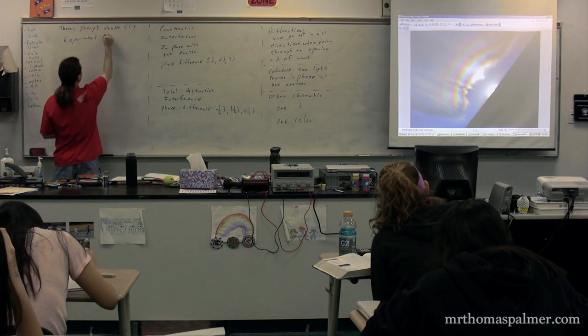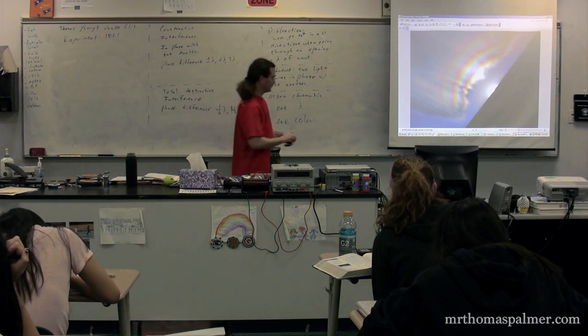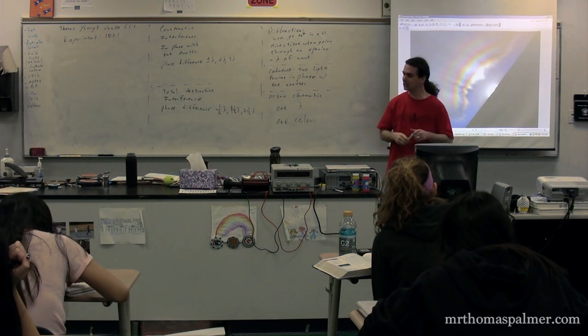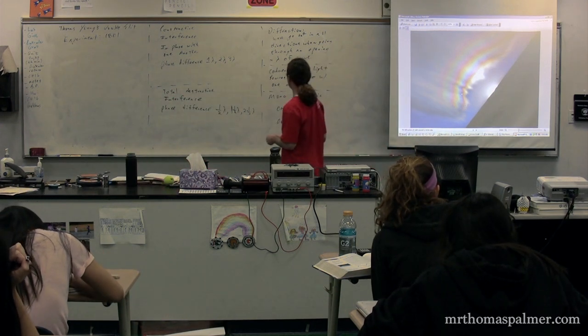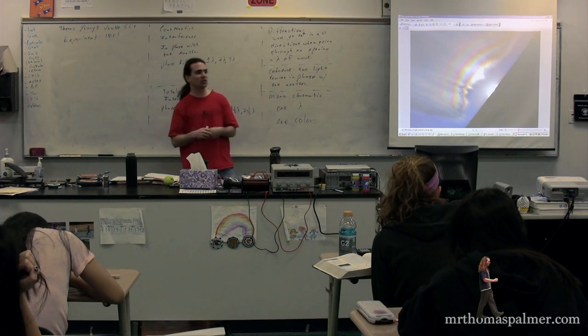Thomas Young's double-slit experiment is a rather famous experiment that he did in 1801. What Thomas Young did was he took coherent light and he passed it through a double slit.